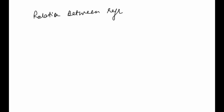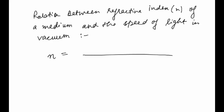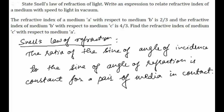The refractive index N is equal to the speed of light in vacuum, that is C, divided by the speed of light in the medium, that is V. So N = C/V. This is the answer for the second part — the expression relating refractive index of a medium with the speed of light in vacuum. Now let's look at the numerical question.